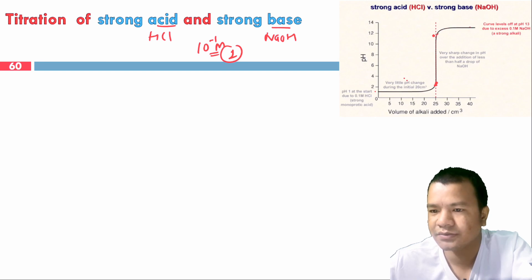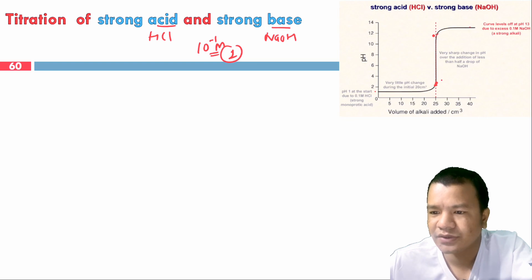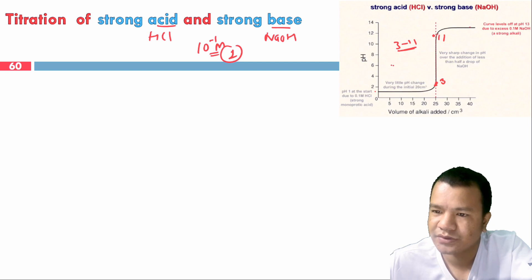This is the titration curve for strong acid versus strong base. The steep rise in pH occurs over the range of pH 3 to 11. If we use methyl orange with a range of 3.1 to 4.4, it falls within this steep rise region.